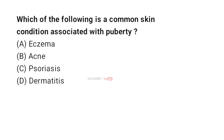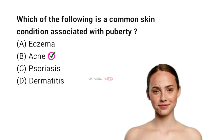Which of the following is a common skin condition associated with puberty? A: Eczema, B: Acne, C: Psoriasis, D: Dermatitis. A common skin condition associated with puberty is acne. It occurs due to increased hormone levels, which cause the skin's oil glands to produce more oil, clogging pores and leading to pimples, blackheads, and other skin issues.